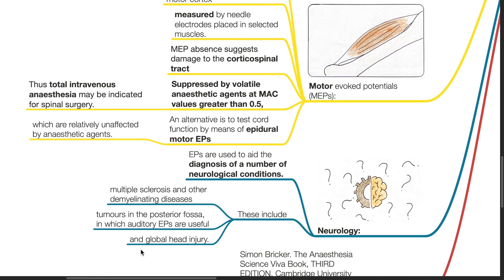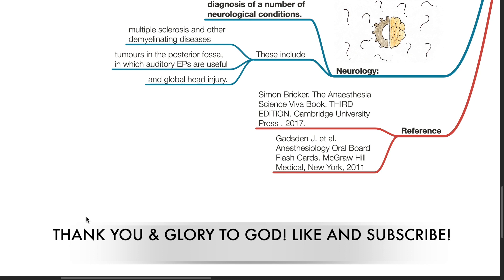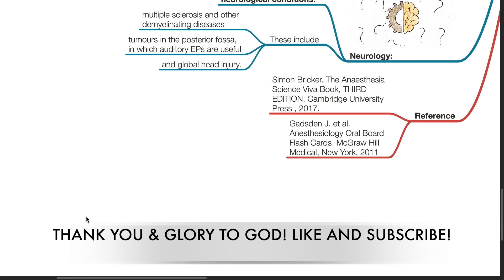In neurology, evoked potentials are used to aid the diagnosis of a number of neurological conditions, such as multiple sclerosis and other demyelinating diseases, tumours in the posterior fossa (in which auditory EPs are useful), and global head injury. Thank you.